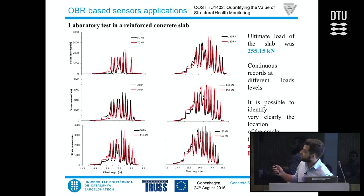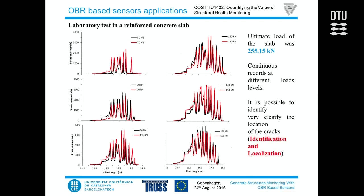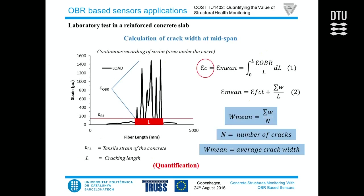This was a small slab, 5.6 meters long, 1.6 meters wide, with a thickness of 0.285 meters — a simply supported slab. The load was applied with the use of an MTS actuator in the middle of the span. We obtained graphs with results showing strain plotted against the length of the fiber for different stretches. We analyzed each stretch separately and obtained the ultimate load of the slab of 255.15 kilonewtons. We were able to obtain continuous records for different load levels, continuous not only in time but also in space.